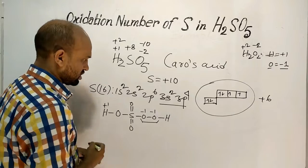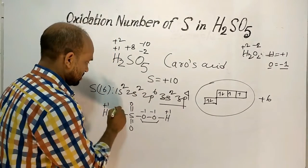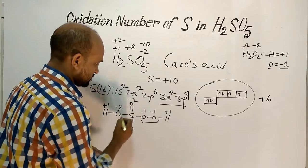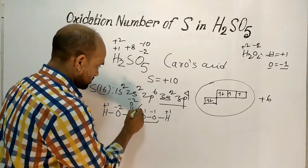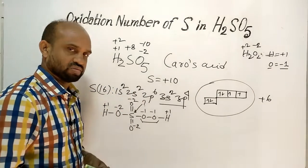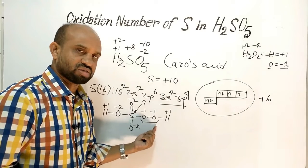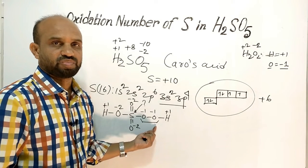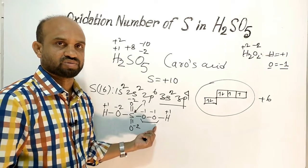Assigning oxidation numbers: the two hydrogens are each plus 1, the three non-peroxide oxygens are each minus 2, and the two peroxide oxygen atoms are each minus 1. So in H₂SO₅, the two oxygen atoms in the peroxide group have an oxidation number of minus 1, and the remaining three oxygen atoms have an oxidation number of minus 2.